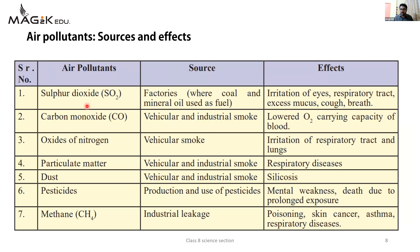Air pollutant - sulfur dioxide. Source matlab kahan se yeh nikalta hai? Factories jahan pe coal aur mineral oil use hota hai - unse sabse zyada air pollutant sulfur dioxide nikalta hai. Iska effect kya hota hai? Irritation of eyes, respiratory tract, excess mucus, cough. Hamaara respiratory tract - lungs se trachea tak - usmein excess mucus production ho jaati hai. Agar sulfur dioxide hamaare body mein enter kare to wo sticky substance yani mucus ka production increase ho jayega, jisse cough aur breathing problems ho sakti hain.